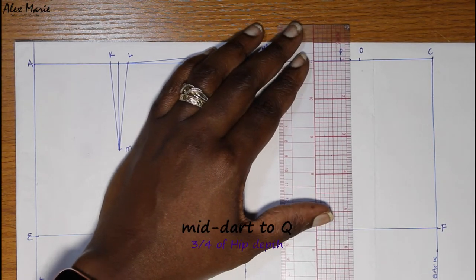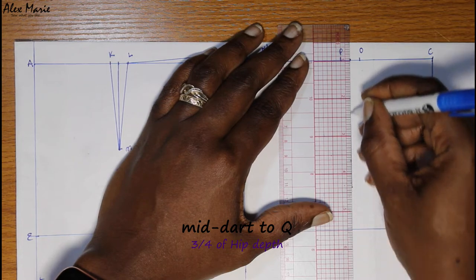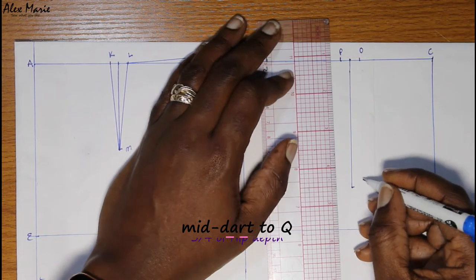Now we're going to square down. The dart is three-quarters of the hip depth. It's always longer at the back. Join our darts.